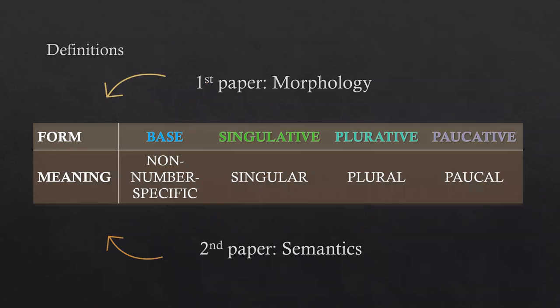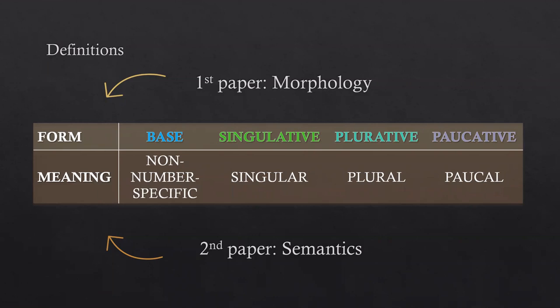My project is going to be an article-based dissertation, divided into three papers. The first one was about morphology and is now submitted. The second one is about semantics. In this table, the top row shows the form — base, singulative, plurative, and paucative — which is what I looked at for the morphology paper.